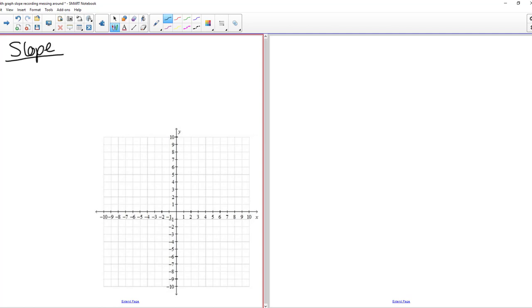So what slope is in relation to lines is that it measures the steepness and direction of a line. This applies to straight lines, measures the steepness and direction.